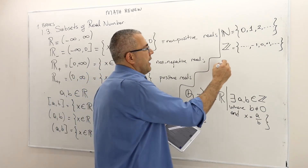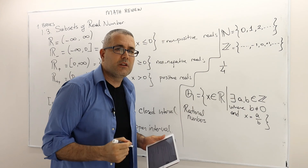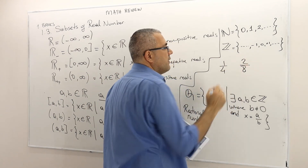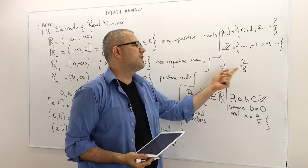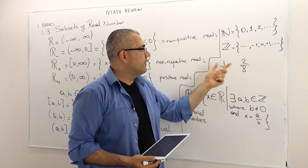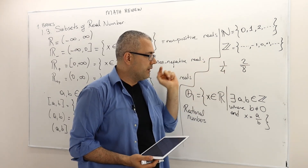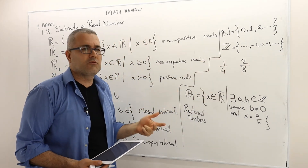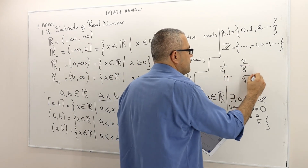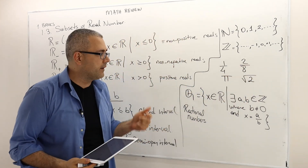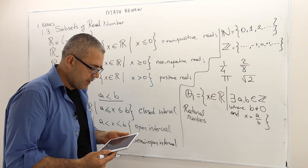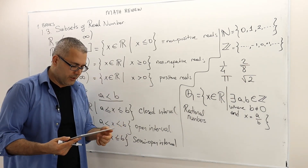For example, one over four is a rational number — here a is 1, b is 4. Two over eight is also rational and equivalent to one over four. But some numbers you cannot write as a over b — for example, pi, or square root of two, cannot be written as a over b. And in fact, if I have time, I'm going to prove that square root of two is not a rational number by using proof by contradiction.